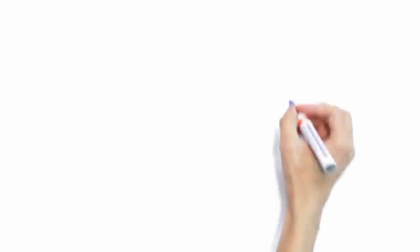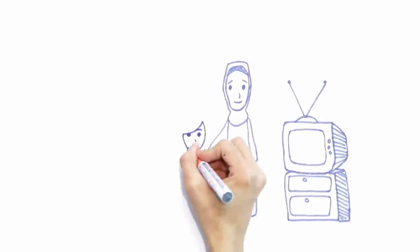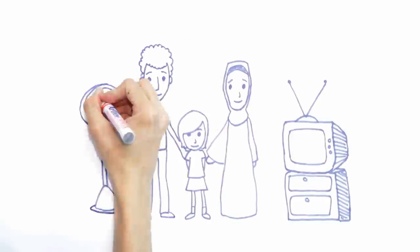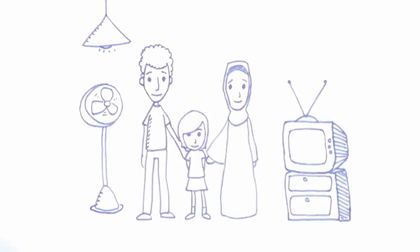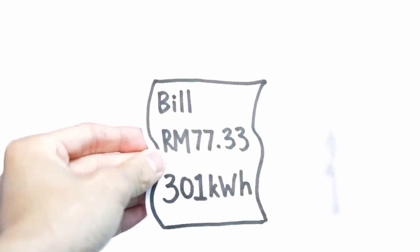Here are examples of 3 typical families with different electricity consumption patterns. This is family A. Their average monthly bill is 77 ringgit and 33 cent.